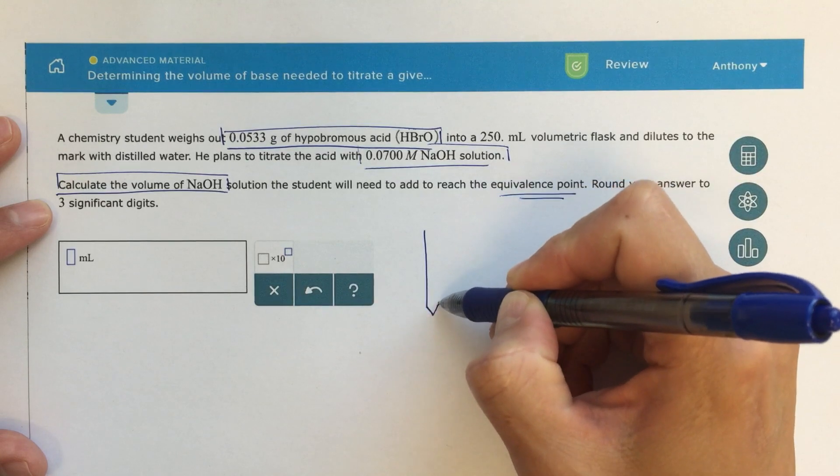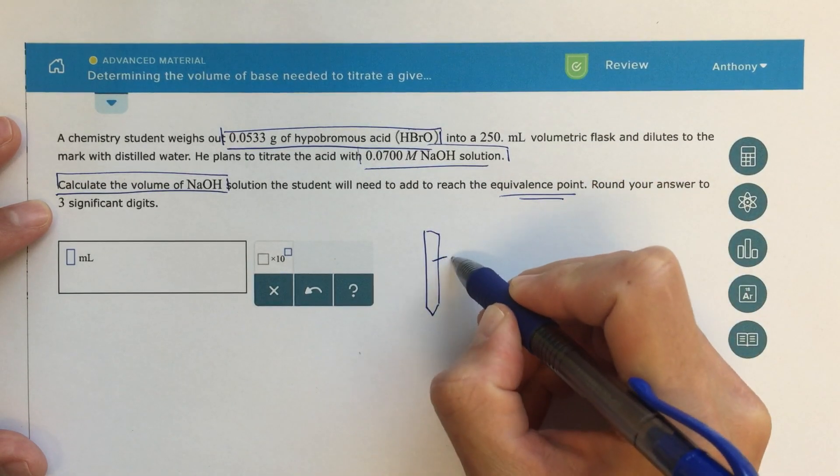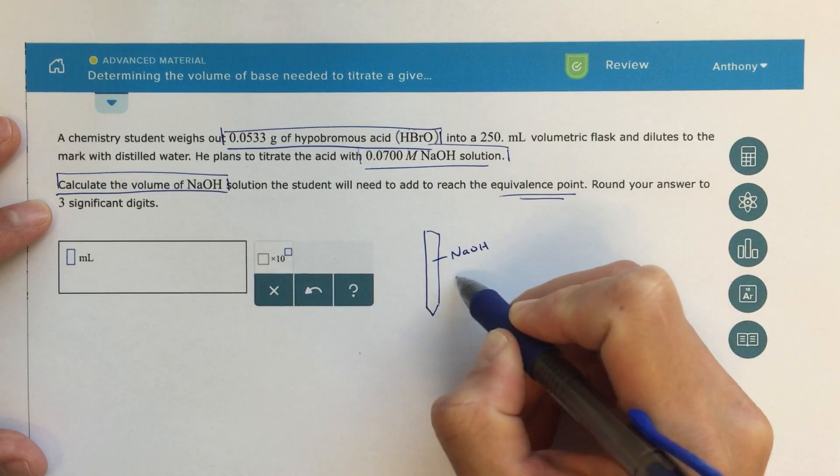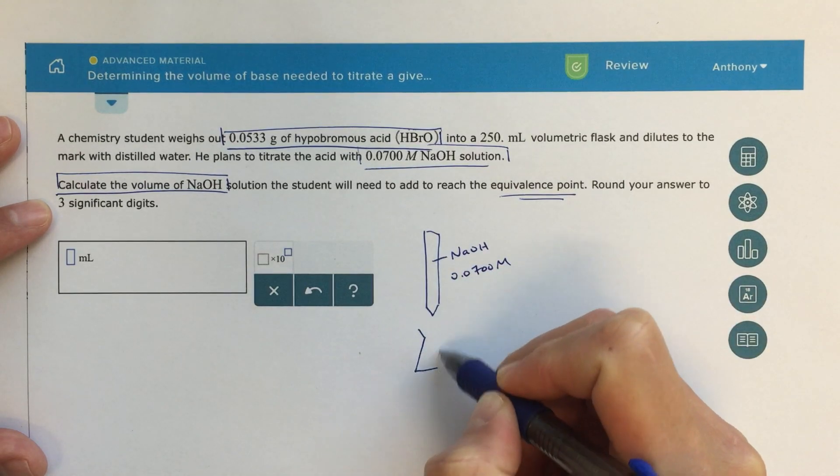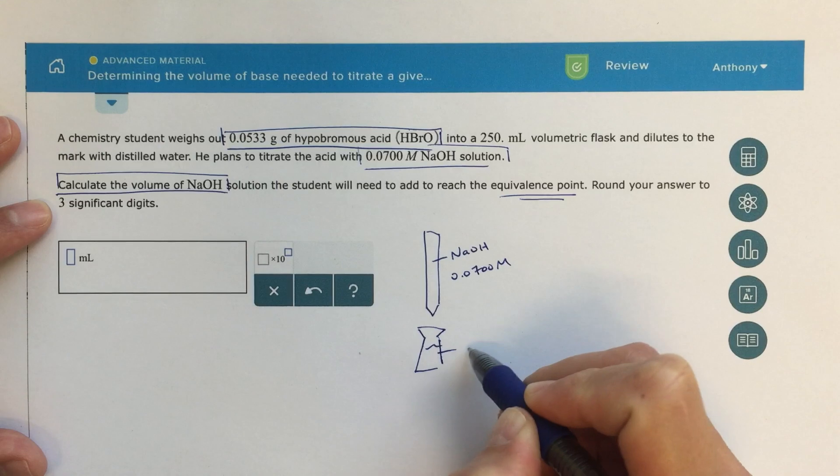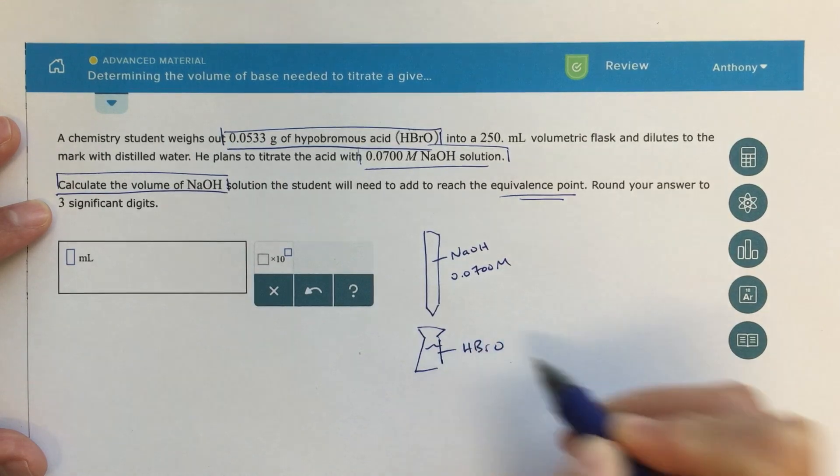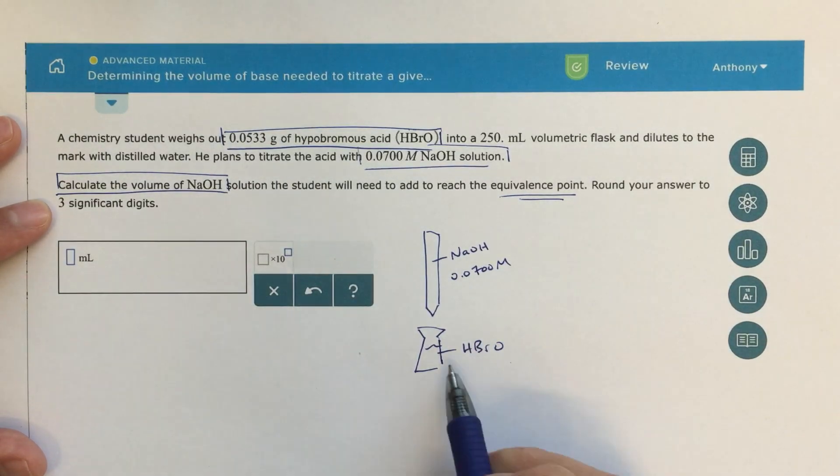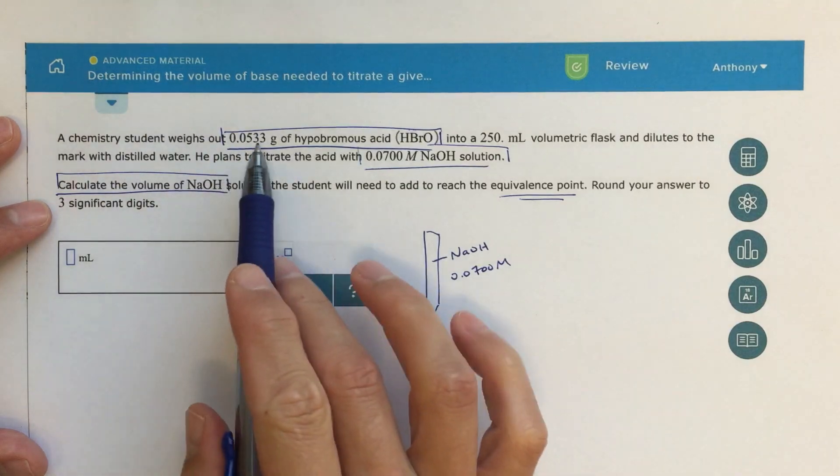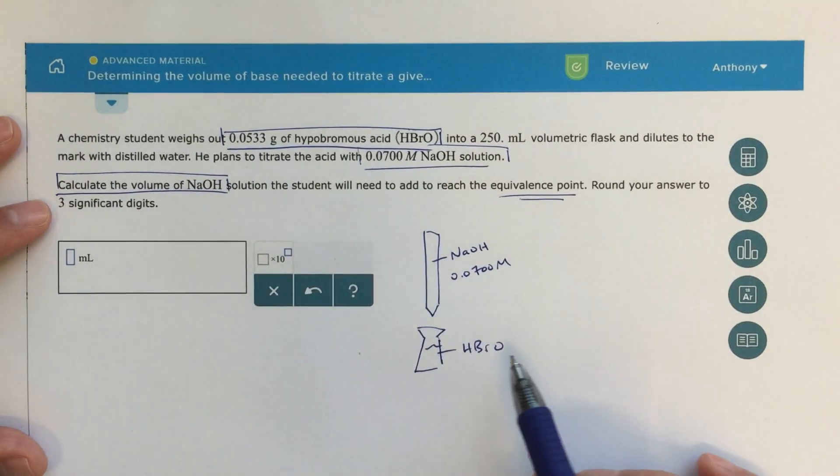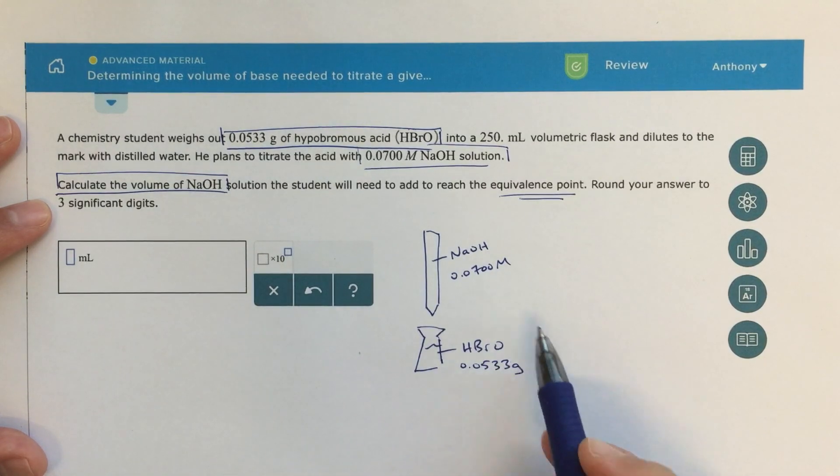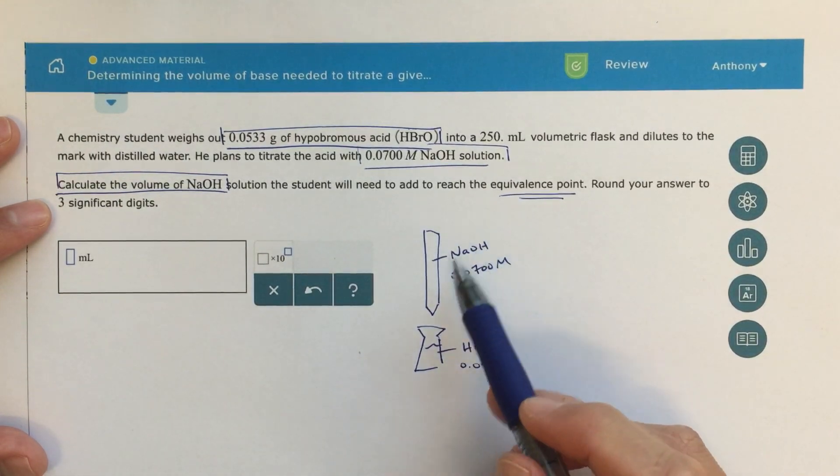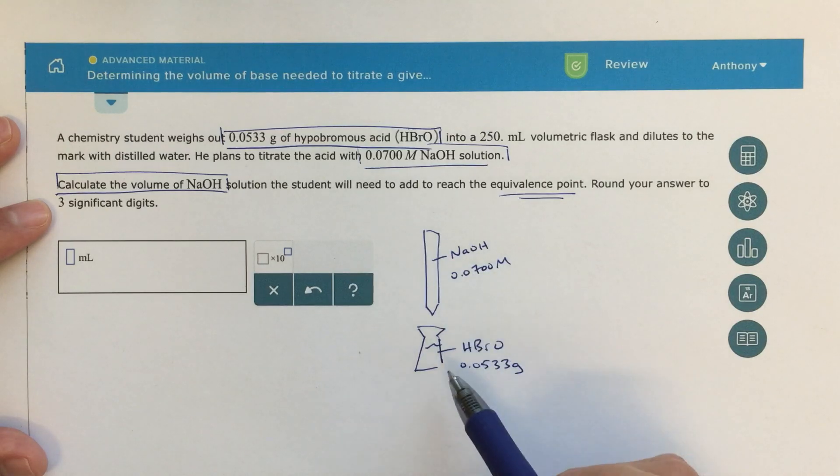The first thing that I might do is just draw a little picture. Here I'm going to have my sodium hydroxide 0.0700 molar, and then in my flask I'm going to have my HBRO solution. And so this HBRO solution, this is going to be where my 0.0533 grams is going to be in here. And then I'm going to be adding the sodium hydroxide, and really I just want to know how much of the sodium hydroxide I'm going to need to add to get to the equivalence point here.